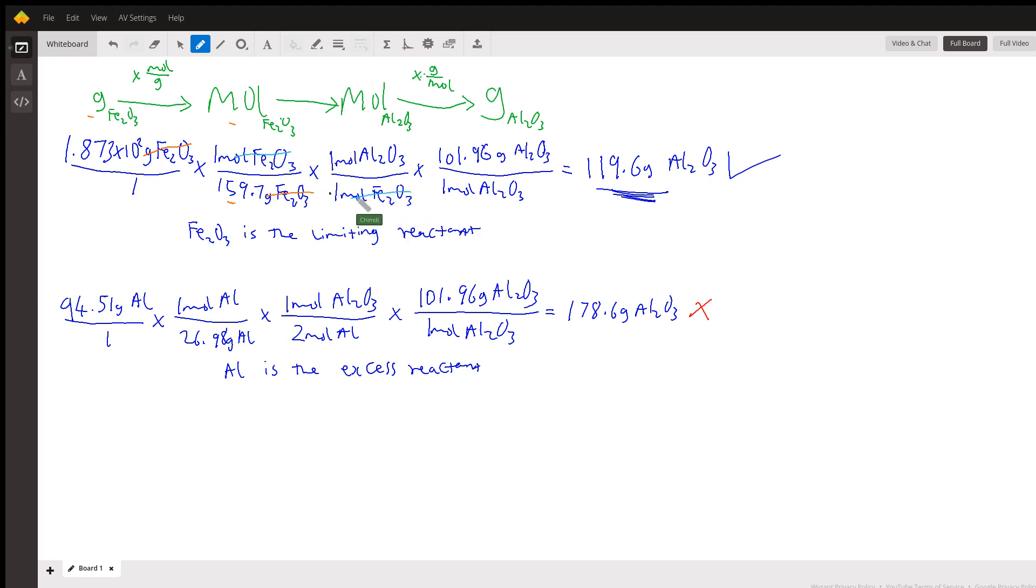This cancels this, and lastly this cancels this, leaving our final answer in grams. It's the same thing we did here. We converted aluminum from grams to moles using its molar mass, then we converted the moles of aluminum to the moles of aluminum oxide using this coefficient from the balanced chemical equation. Then the last step was to convert from moles of aluminum to grams of aluminum, leaving our final answer in grams.